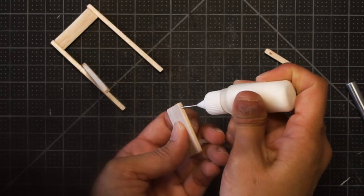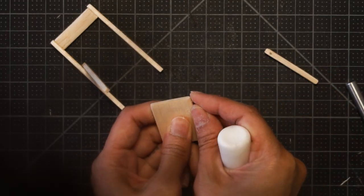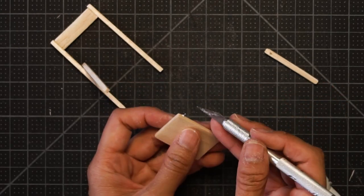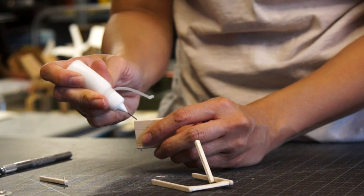And here I'm installing the quote unquote hardware. Again, it's just the top part of a regular push pin that is being inserted into that channel that I created earlier so that the chair can actually slide up and down.